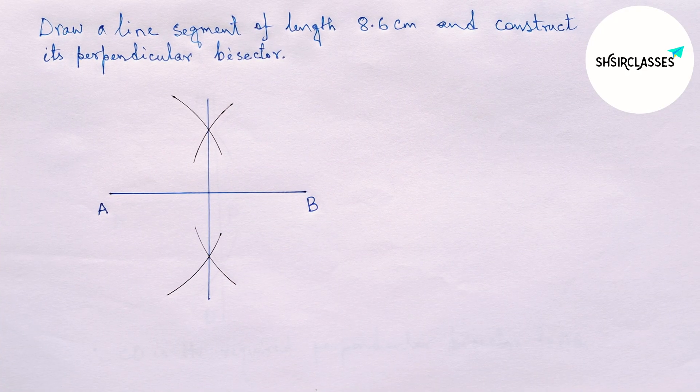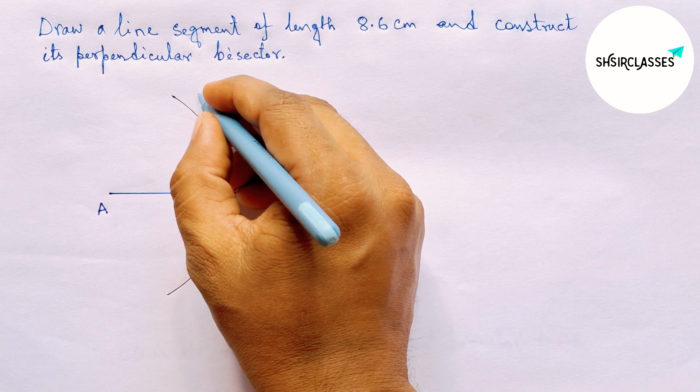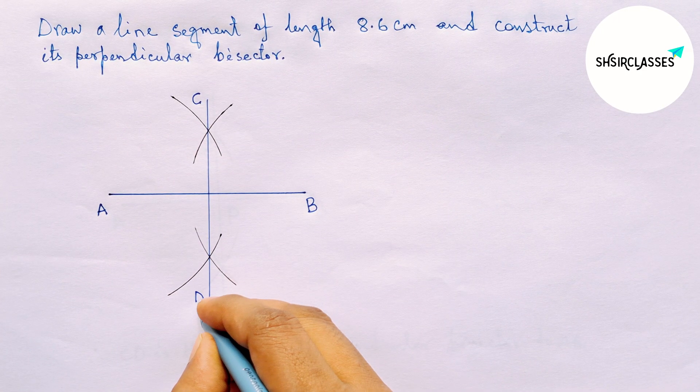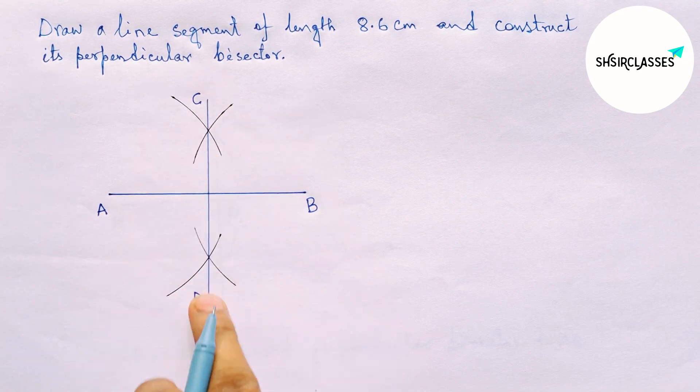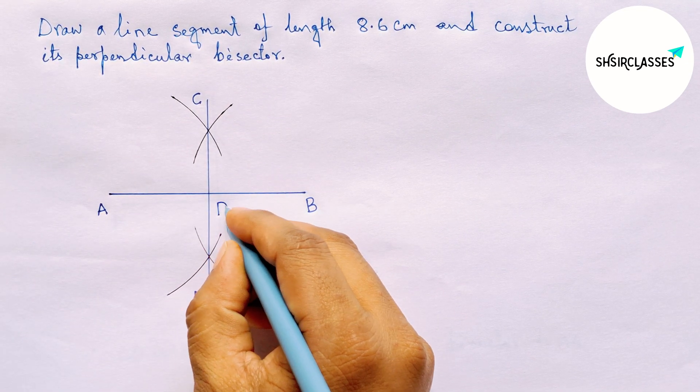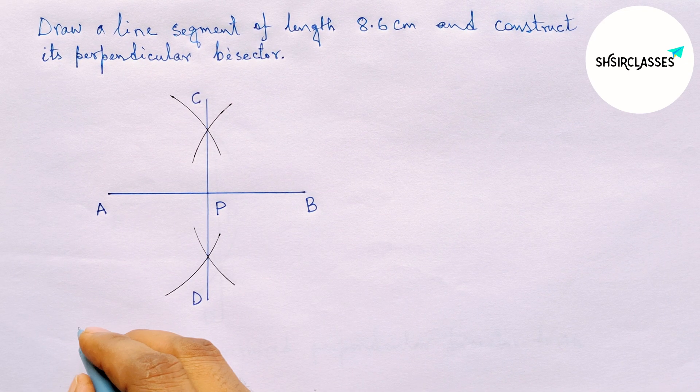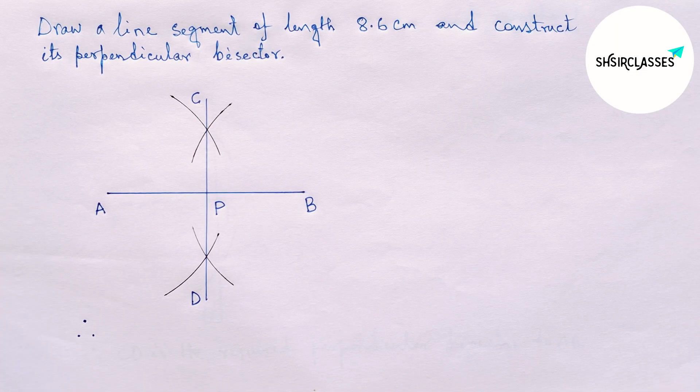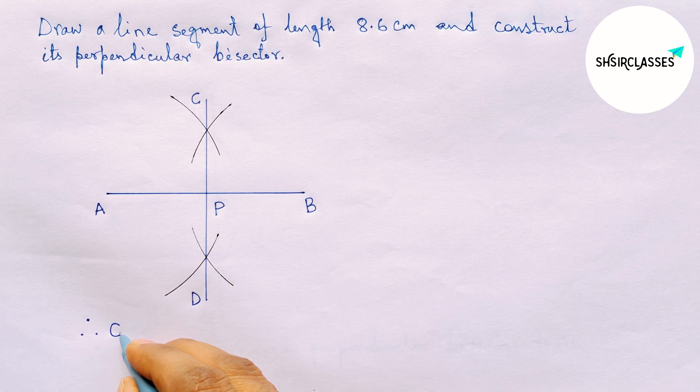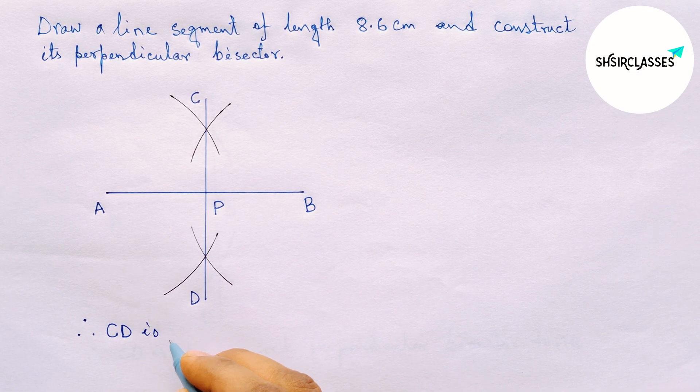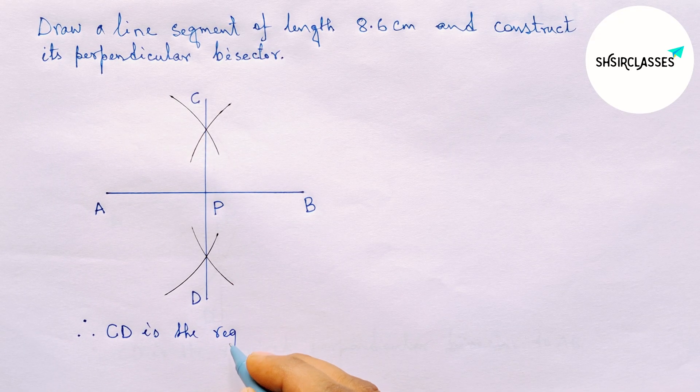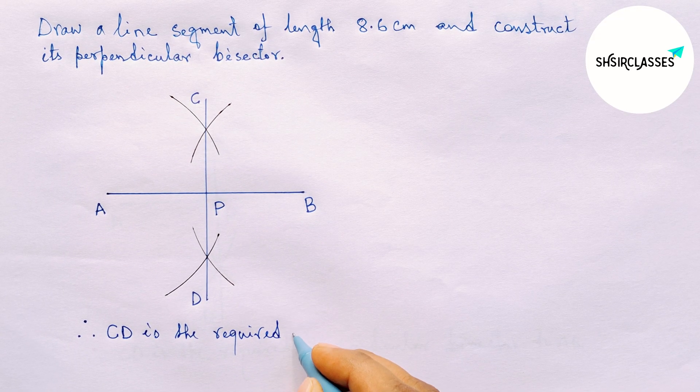This is the required perpendicular bisector. So labeling here C and D. AB and CD both intersect here at a point, so taking here point P. Therefore, CD is the required perpendicular bisector to the given line AB equal to 8.6 centimeters.